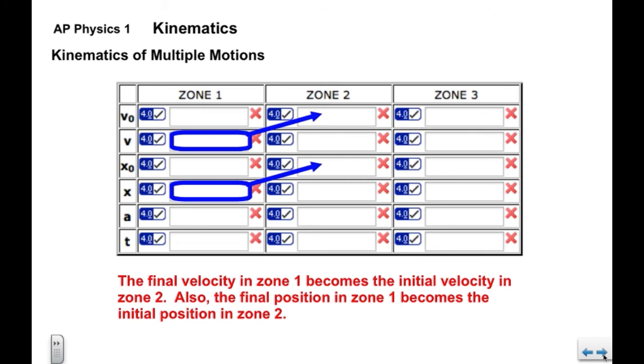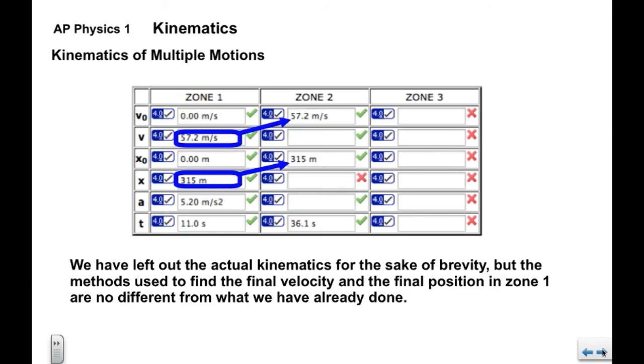So when we look at the table, once we've done all the kinematics in Zone 1, we're going to take this final velocity, and we're going to transfer it right up into the initial velocity for Zone 2. We're going to take the final position from Zone 1, and move that right up into the initial position for Zone 2.